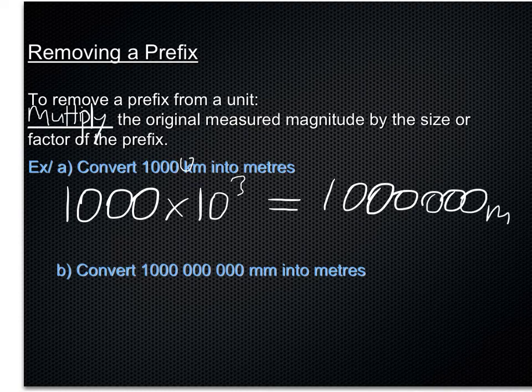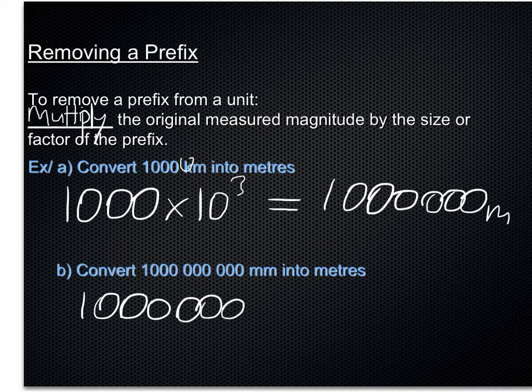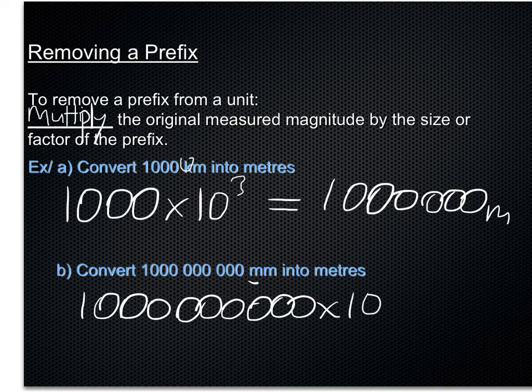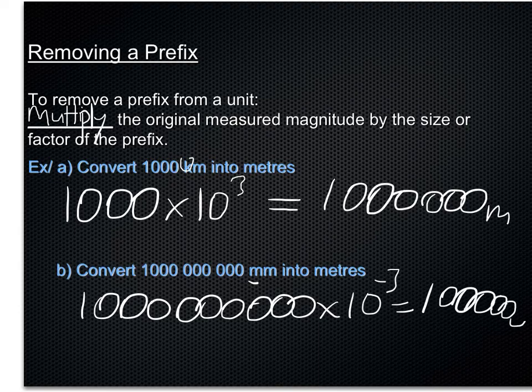If we want to know how many meters 1,000,000,000 millimeters is, once again, we take the billion and multiply it by the value of a millimeter, which is 10 to the power of minus 3. So this time, it should get smaller by a factor of 1,000, so we should get a million meters.